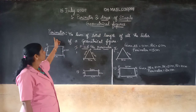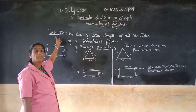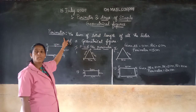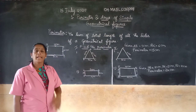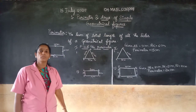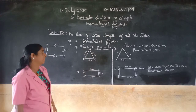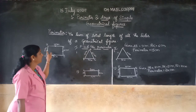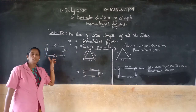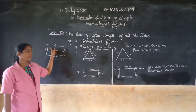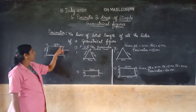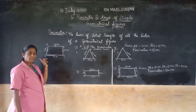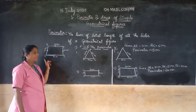Now let's go to perimeter first. What is the meaning of perimeter and how to find out the perimeter? Here one simple geometrical diagram is shown. Here A, B, C, D is a simple geometrical figure.